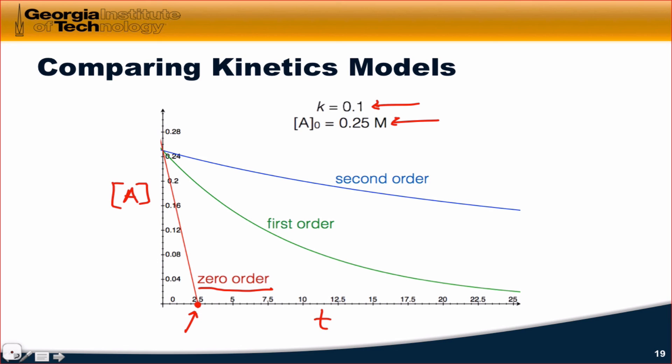The first order process is a slower decay that eventually tapers off to zero, far, far out at infinity, in fact. But notice that for the same value of k, it's a slower decline, a slower decline in the concentration than the zero order case. And the second order case is even slower. The decline is even slower for the common k value of 0.1. So other things being equal, zero order reactions are most rapid, followed by first order reactions, and then second order reactions, which are the slowest.